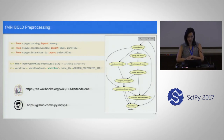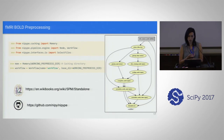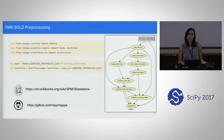The only difference with a pipeline you would use with the classical GLM is that we don't want to use smoothed data, because we are modeling smoothness in our algorithm.